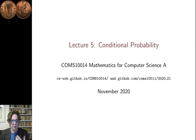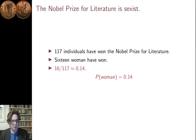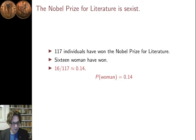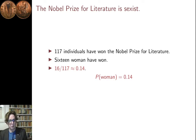Conditional probability is fairly straightforward after you've looked at an example. The Booker Prize was announced a couple of days ago, so I thought I'd take an example about prizes. What I discovered, which is really quite shocking, is just how sexist the Nobel Prize for Literature is. 117 individuals have won the Nobel Prize for Literature, and of those, only 16 have been women. So 16 over 117 is about 0.14 — that's less than one in seven. If you chose a Nobel Prize winner at random, there is only a 0.14 chance that that person will be a woman.